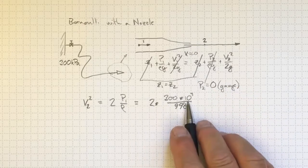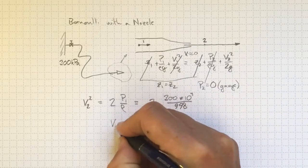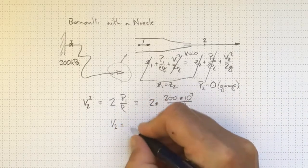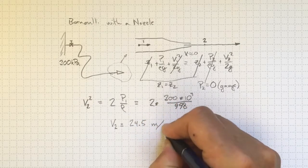So if we punch these in, the units are all consistent, we'll wind up with v2, after we take the square root, equal to 24.5 meters per second.